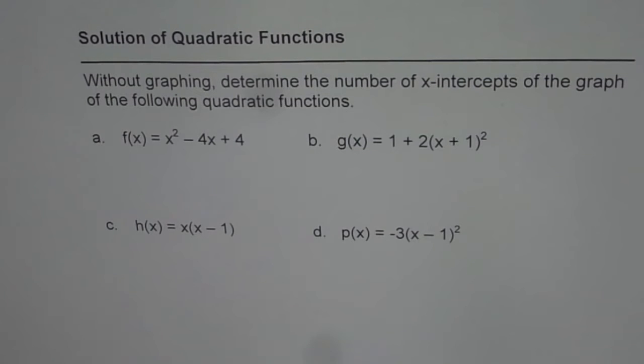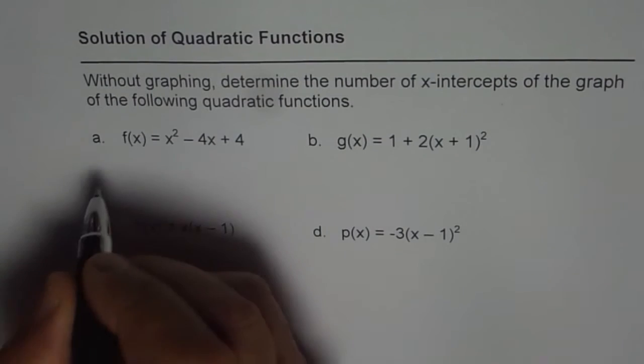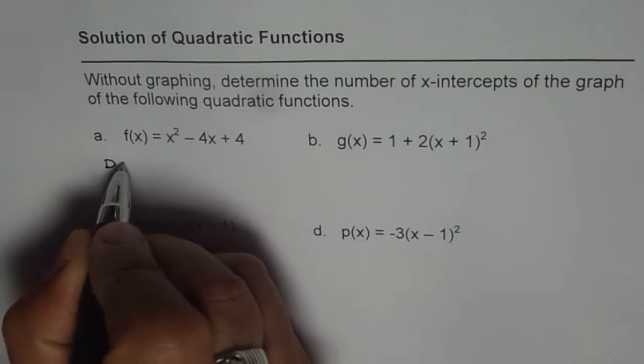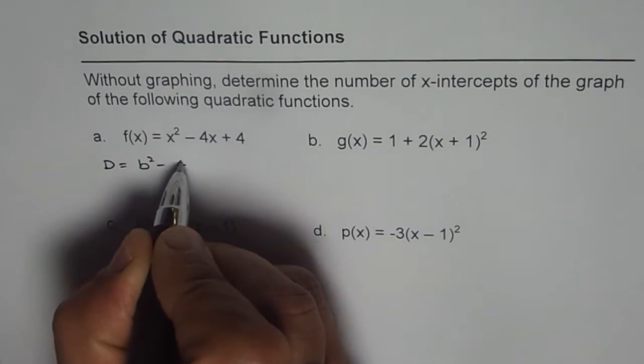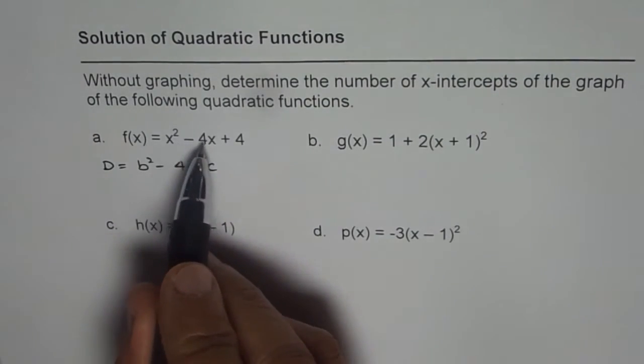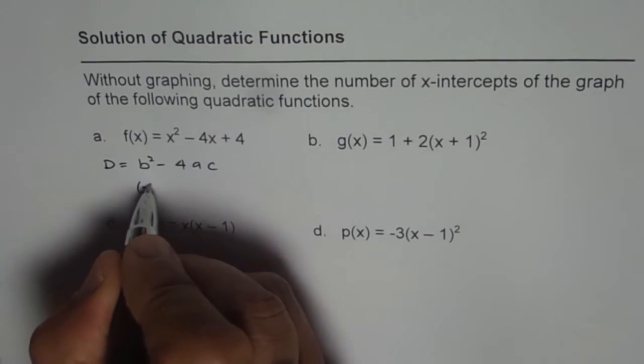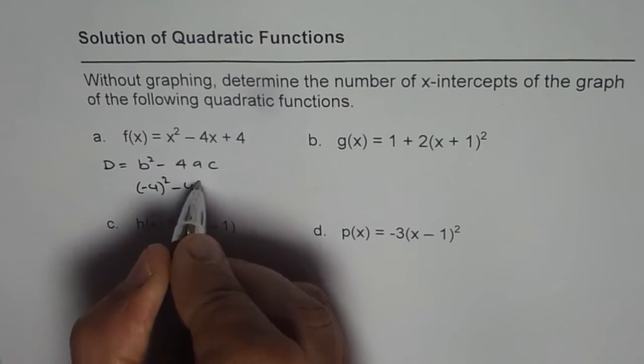Now, I would like you to pause the video and answer how many x-intercepts will be there for each one of them. Here is my suggestion. Whenever given in standard form, you need to find the discriminant, which is b squared minus 4ac. In this case, b is minus 4, so we can find (minus 4) squared minus 4 times, a is 1 and c is plus 4,